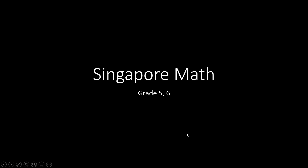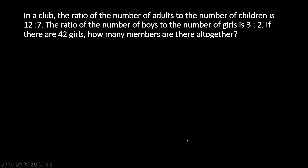Hi everyone, today we are going to see a ratio problem which is more likely applicable for grade 5 and grade 6 as well. In a club, the ratio of the number of adults to the number of children is 12 is to 7. The ratio of the number of boys to the number of girls is 3 is to 2. If there are 42 girls, how many members are there altogether?